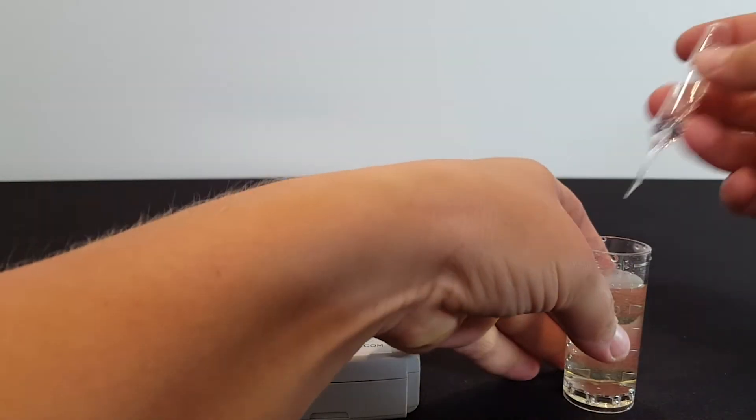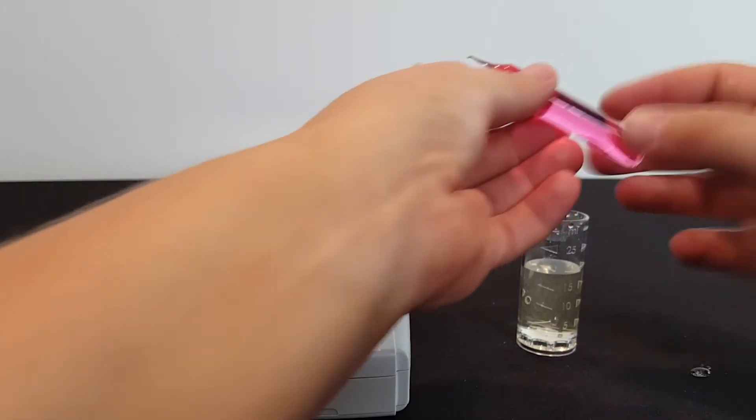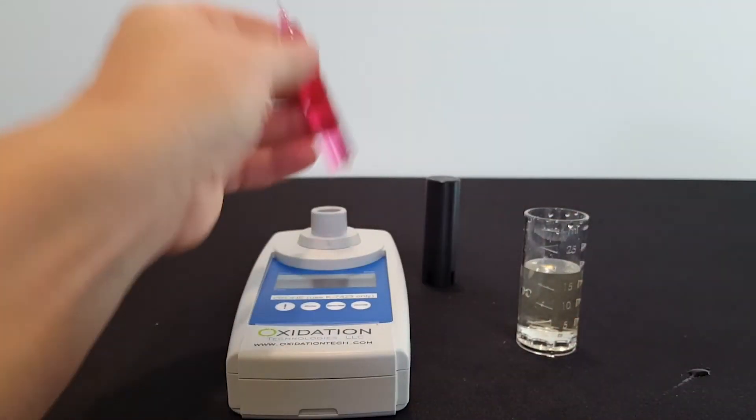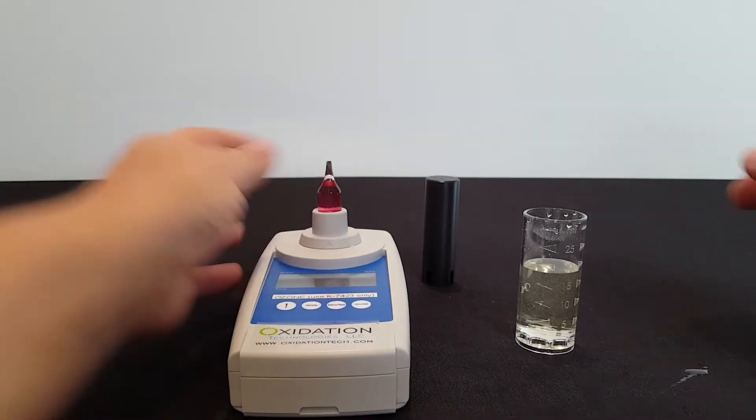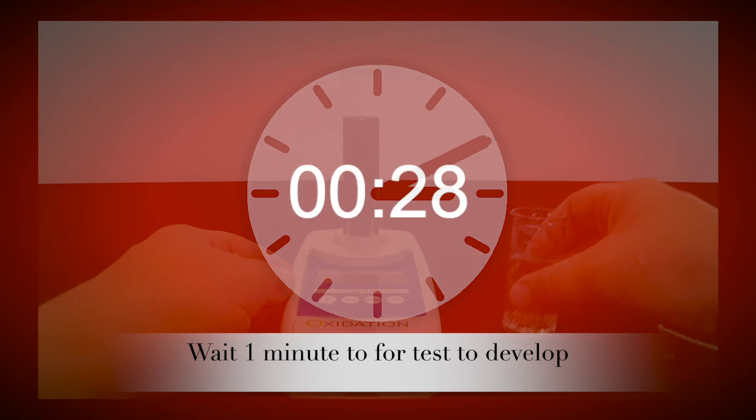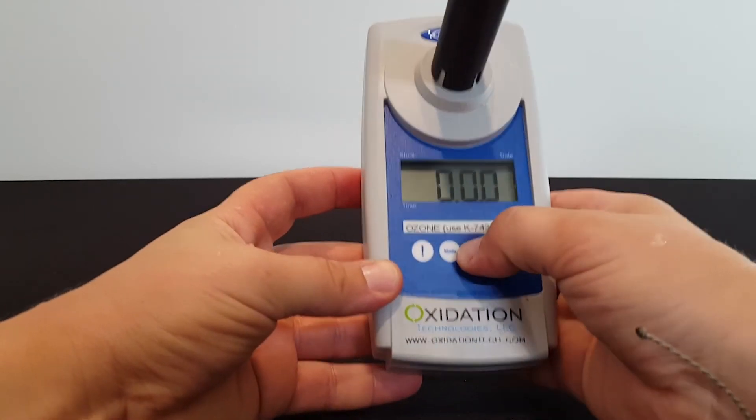I am then going to put the ampoule in, snap off the tip, it instantly fills with the sample, I am going to quickly dry it, and then I am going to press it into the meter, pushing it all the way down, put the light shield on, and then press the zero test button.